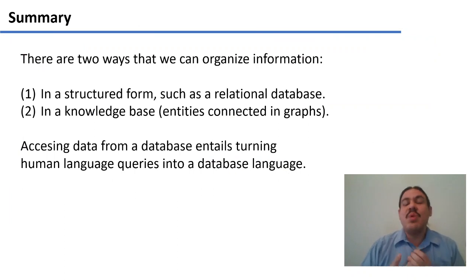In summary, this is one way that computers organize information, for example, in a very structured way like a relational database. In the following videos, we're going to study a less structured way called a knowledge base, where we have entities and attributes, but they are connected in different ways. They're connected in graphs, and we can make inferences based on the rules that we have in the graphs. This way, we can turn our human questions into questions that the computer can understand. For example, SQL instructions. Thanks.